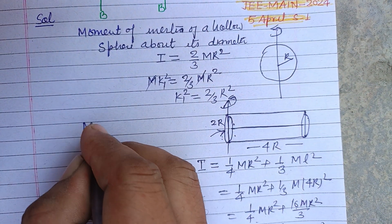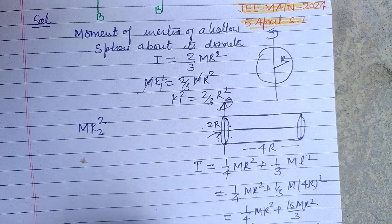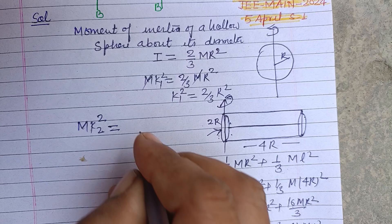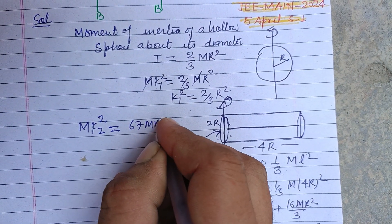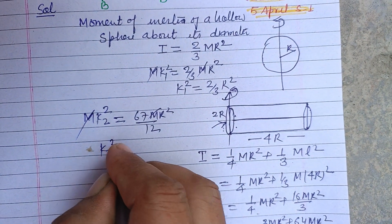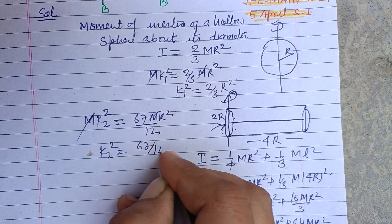Now we take its radius of gyration as k₂, so mk₂² equals 67mR²/12. m cancels, so k₂² equals 67R²/12.